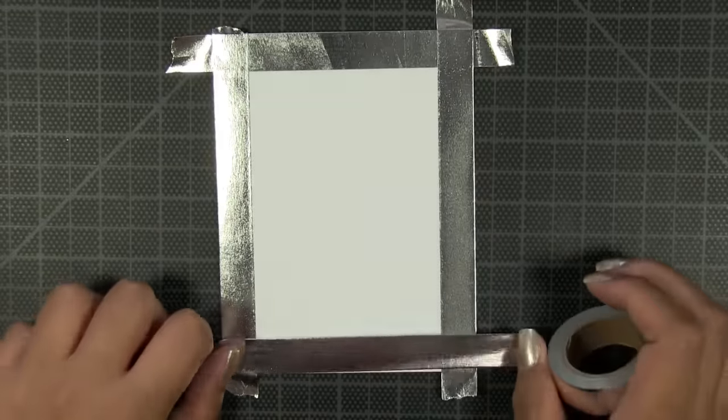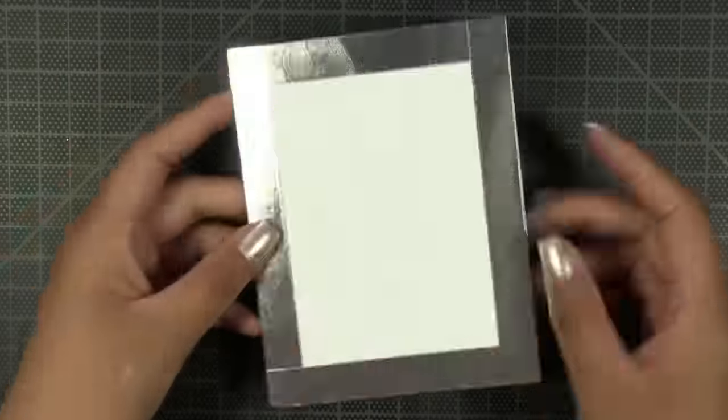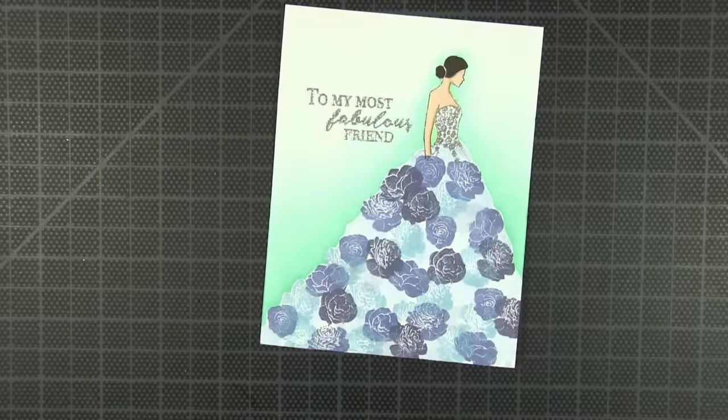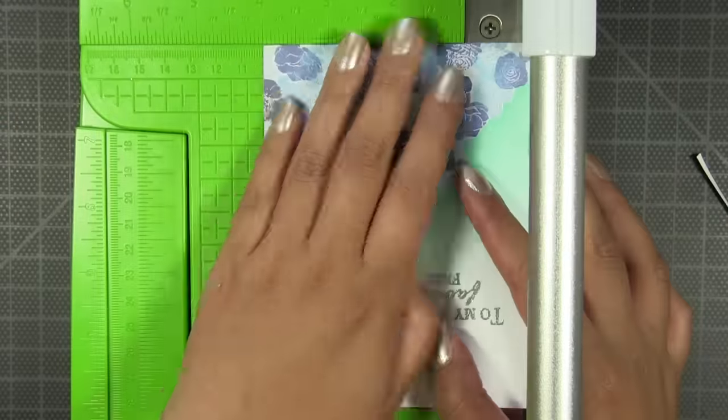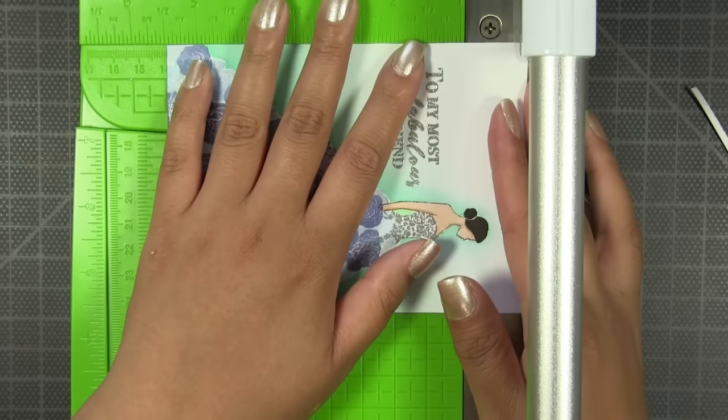Next I'm going to take a side folding A2 size card base and I'm just going to apply some of our new burnished silver foil tape on all of the edges. Then I'm going to take my stamped panel and just trim off half of a quarter inch on all four sides because I want to pop this up on my card base and have that silver edge showing on all four sides.